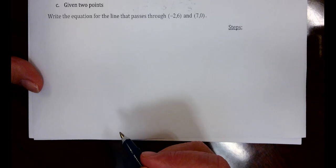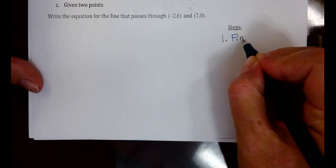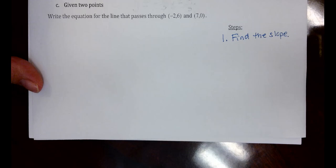Given two points, there is a two-step process for this. Our first step is to find the slope and we must use the slope formula for this step.